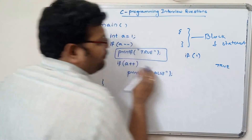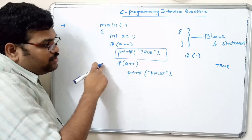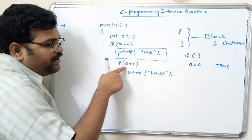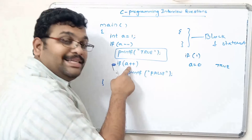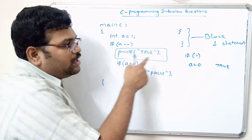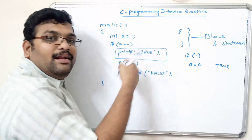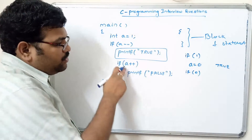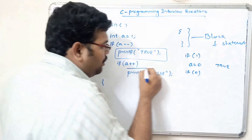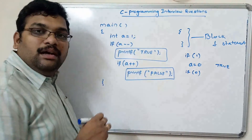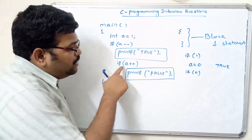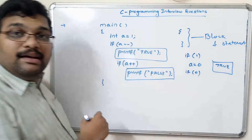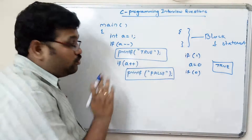After printing 'true', a is decremented and becomes 0. Next, if a++: this is post-increment, so the old value of a (which is 0) is assigned to the condition first. If(0) means false, and there is no false block. There are also no curly braces here, so only one statement is in this block. Since the condition is false, it is skipped. The output of this program is just 'true'.